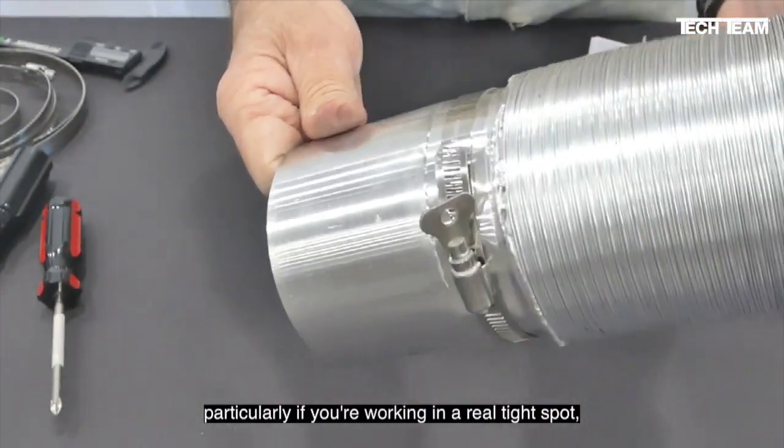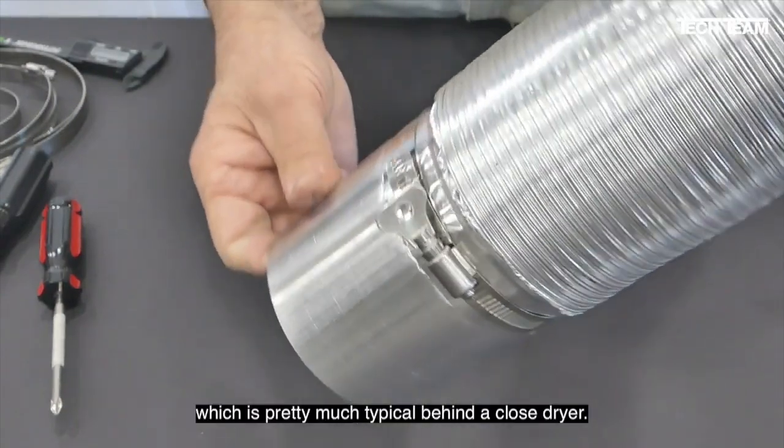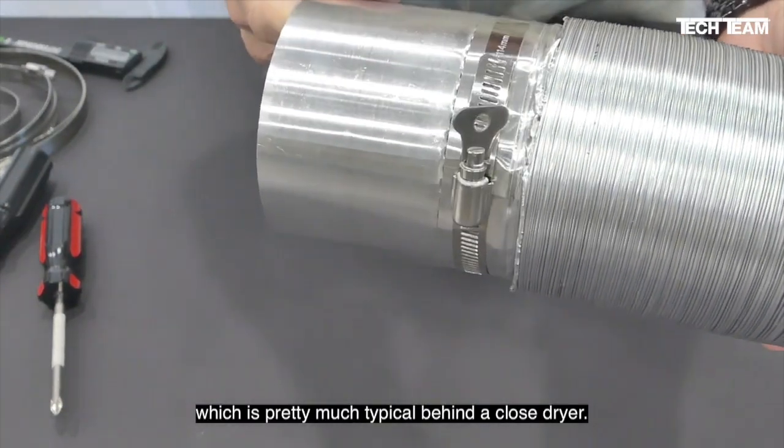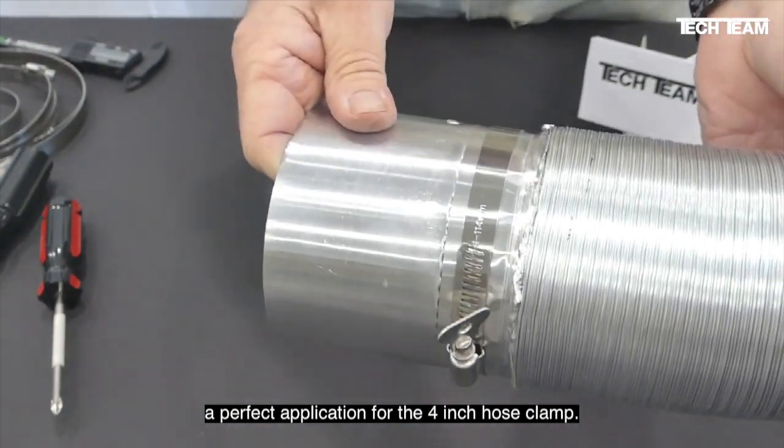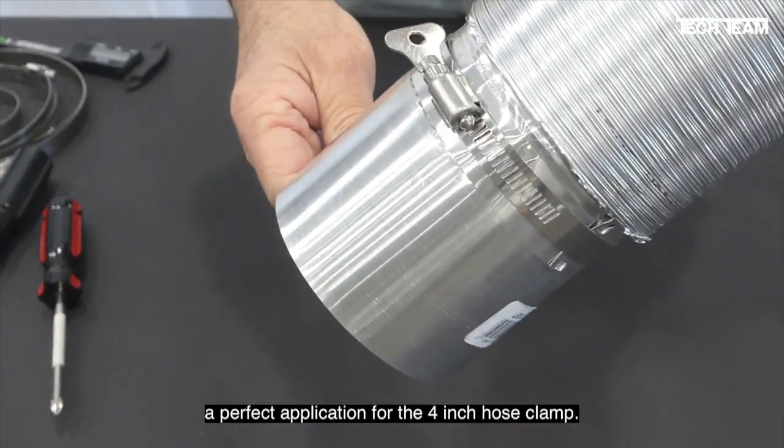Particularly if you're working in a real tight spot, which is pretty much typical behind a clothes dryer. And there you go. Perfect application for the four inch hose clamp.